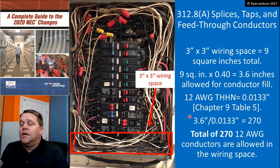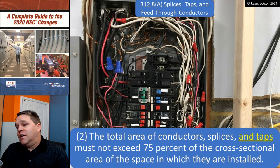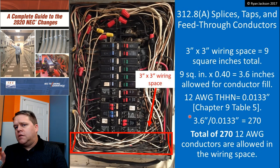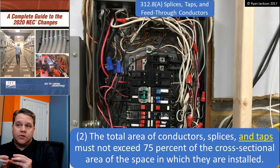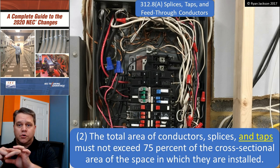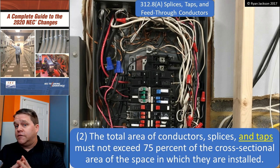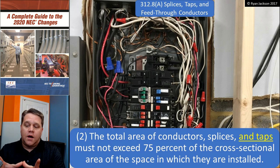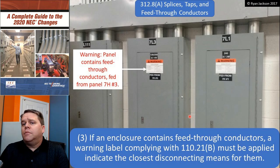A2: the total area of conductors, splices, and taps must not exceed 75% of the cross-sectional area of the space in which they're installed. So A1 says no more than 40% fill for conductors alone; A2 says conductors plus the splicing equipment — twist-on wire connectors, push-in wire connectors, all of those — must not exceed 75% fill. There is no way you're going to violate that. We saw that 40% fill is 270 twelve-gauge wires in a three-inch by three-inch space.